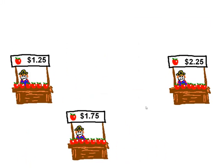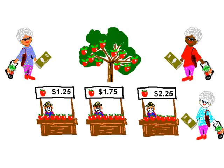Suppose we had three farmers all growing apples and they have different prices. One farmer is selling apples for $1.25, the second farmer for $1.75, and the third farmer for $2.25. Now it's clear that they're getting all their apples from the same tree, so they're identical. So if you were looking to purchase apples, which of these farmers would you buy from?